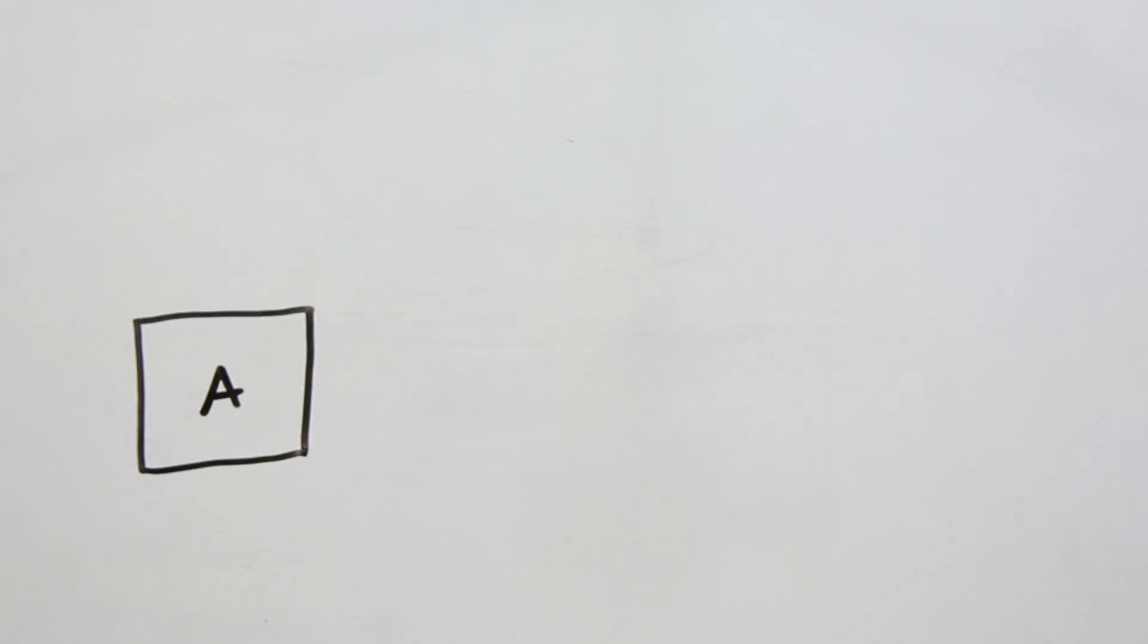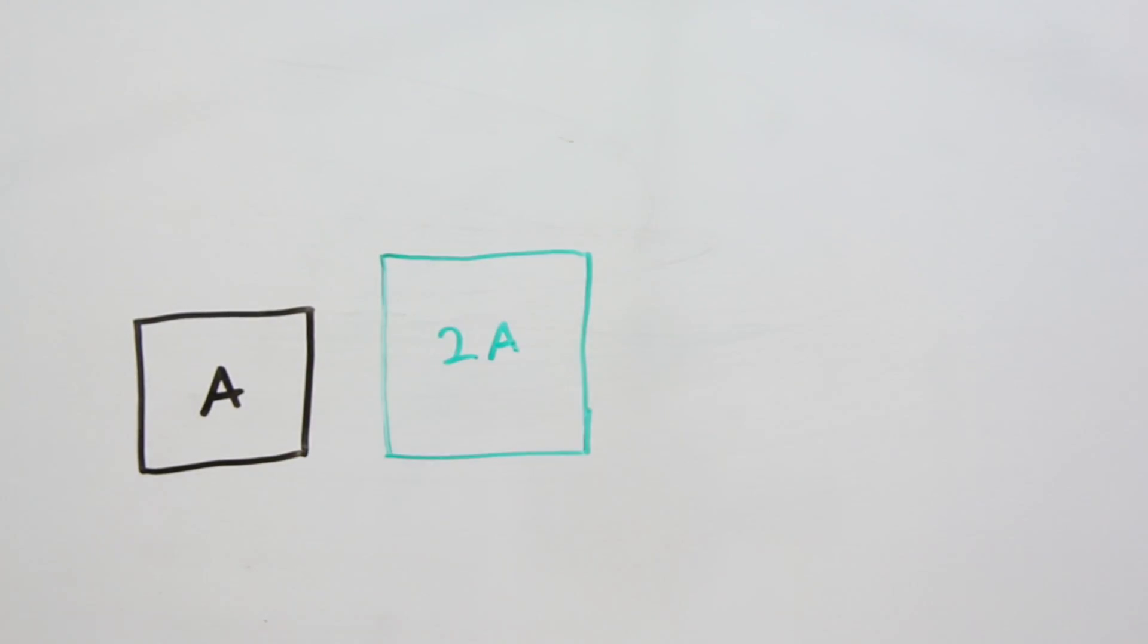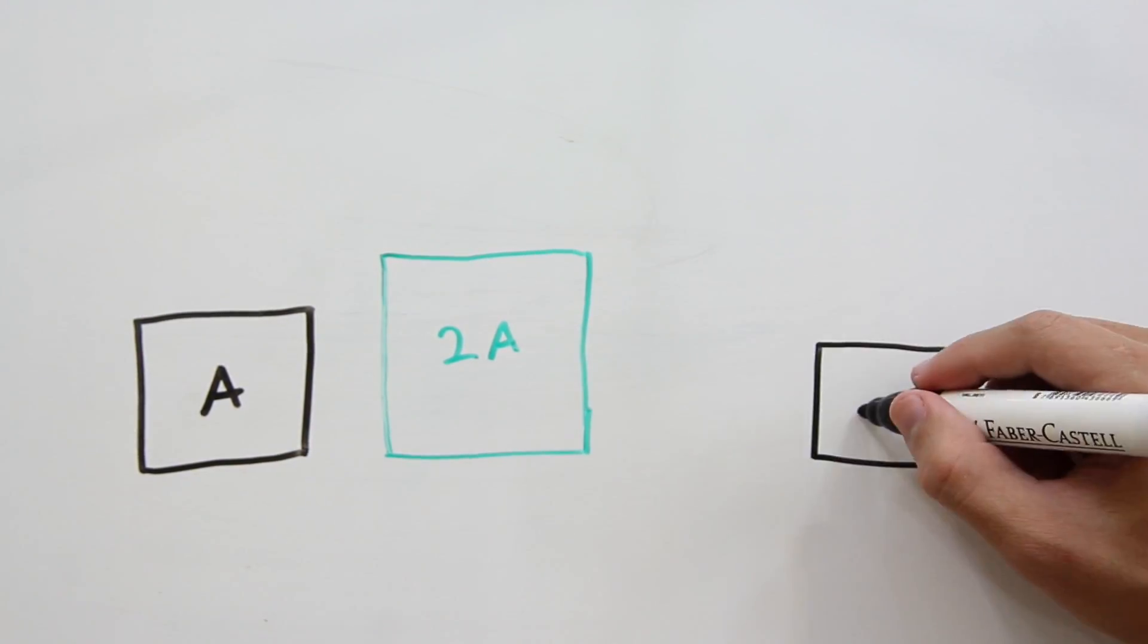Another question, given a square, how do you make another square with double the area of the first one?